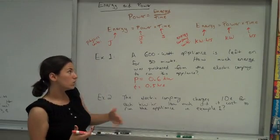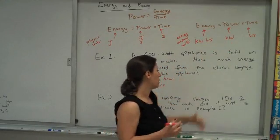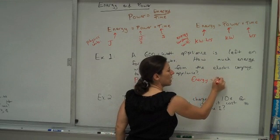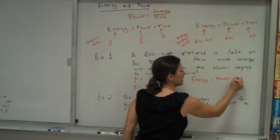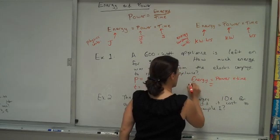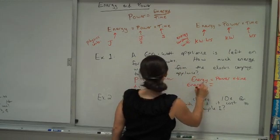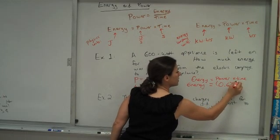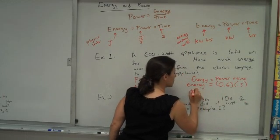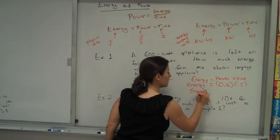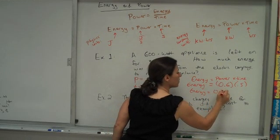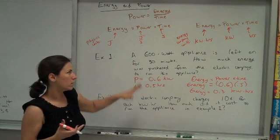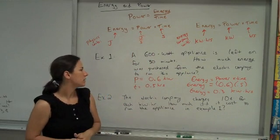So we want to know how much energy is used. Now we have the units ready to go. We can just sub in energy is power times time. The power is 0.6 kilowatts. The time is half an hour, so the end result is going to be 0.3 kilowatt hours. That's the amount of energy required to run the 600-watt appliance for half an hour.